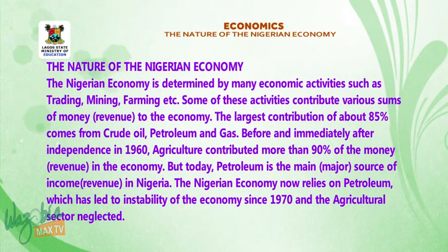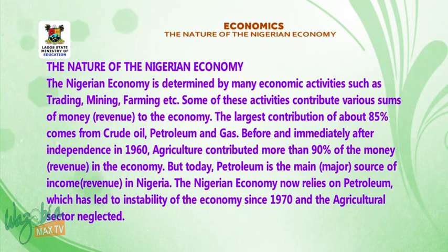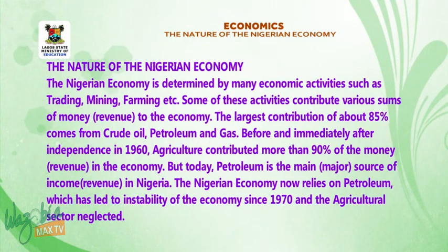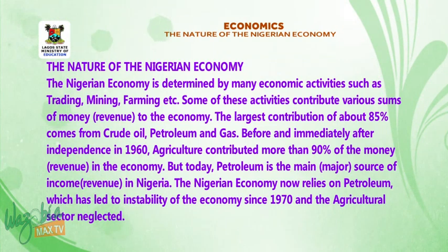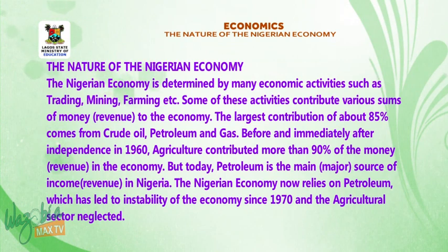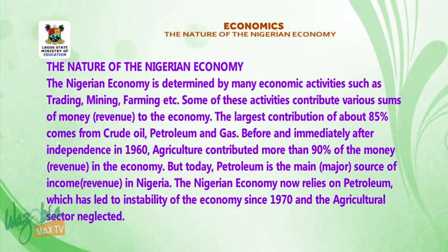Nature of Nigerian economy. The Nigerian economy is determined by many economic activities, such as trading, mining, farming, and so on. Some of these activities contribute various sums of money to the economy. The largest contribution of about 85% comes from crude oil, petroleum, and gas. Before and immediately after independence in 1960, agriculture contributed more than 90% of money in the economy. But today, petroleum is the main source of income in Nigeria.